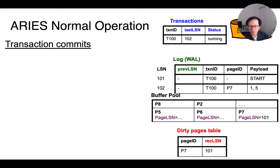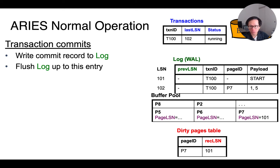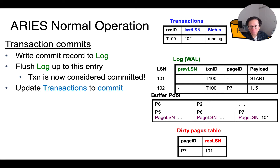When a transaction decides to commit, we first write the commit record to the log. Then we flush the log up to that entry to the disk, and the transaction is now considered to be committed. We need to update the transactions table to commit and flush the dirty data pages to the disk sometime later on.